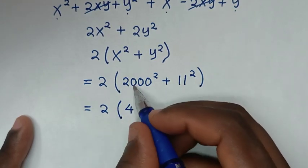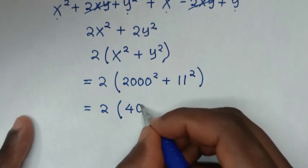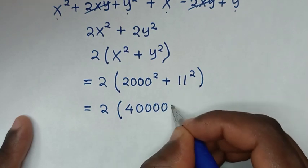2000 squared equals 4 million (4 with 6 zeros), then plus 11 squared, which is 121.